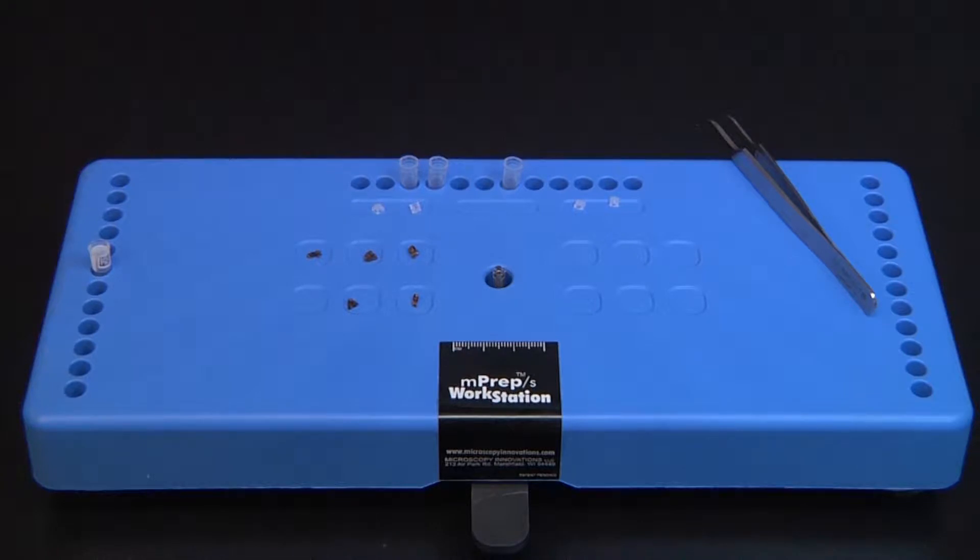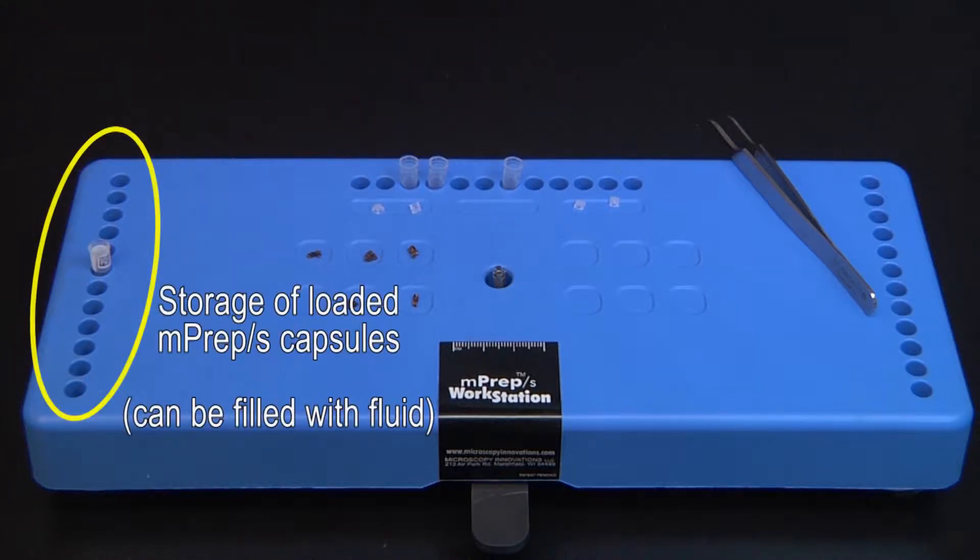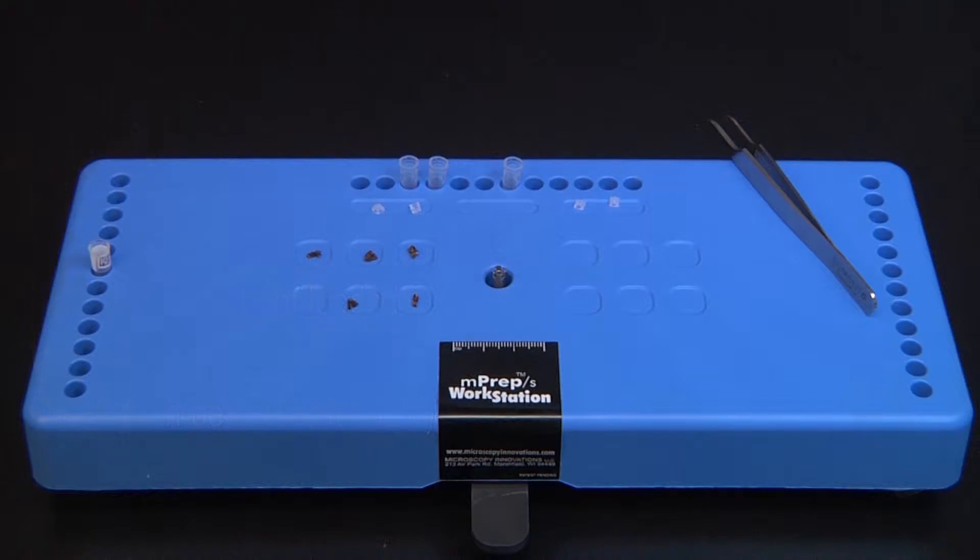Both sides of the workstation have 12 wells to hold MPREP capsules after they have been loaded with specimens. These wells can be filled with buffer or fixative to keep specimens immersed until processing. The spacing between capsule wells matches your multi-channel pipetters to enable fast and easy subsequent processing.